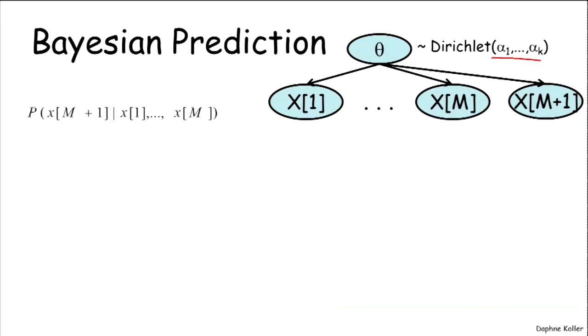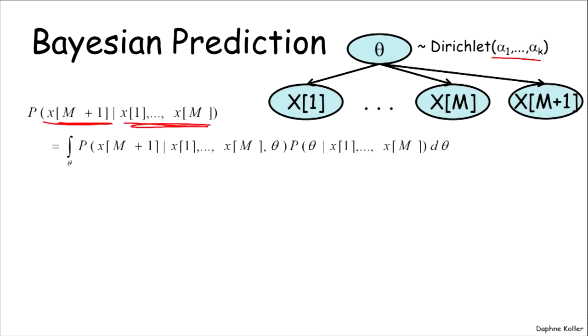And now we have the m plus first data instance and we want to make a prediction about that. So the problem that we're trying to solve is now the probability of the m plus first data instance given the m first data instances that we've seen previously.